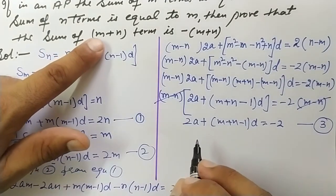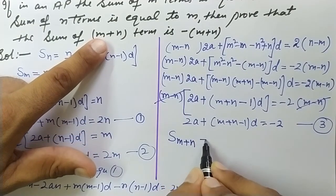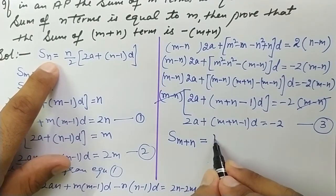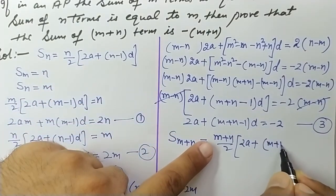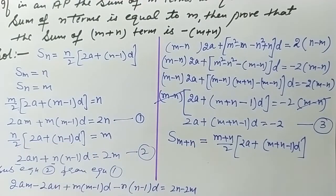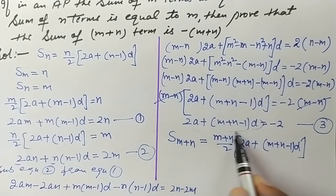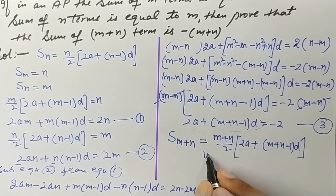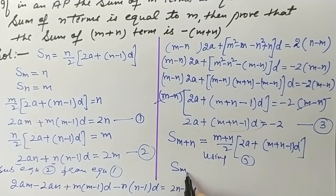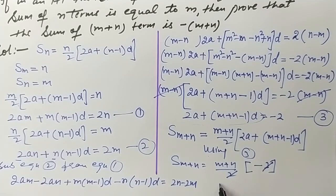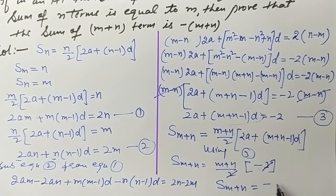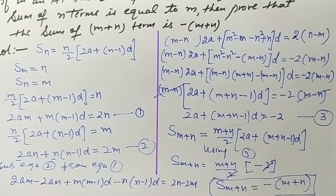Now we find S_(m+n). Using the formula: S_(m+n) = (m+n)/2 · [2a + (m+n−1)d]. From equation 3, the value of [2a + (m+n−1)d] is −2. So S_(m+n) = (m+n)/2 · (−2). The 2s cancel, leaving S_(m+n) = −(m+n). That is exactly what we needed to prove. Thanks for watching!